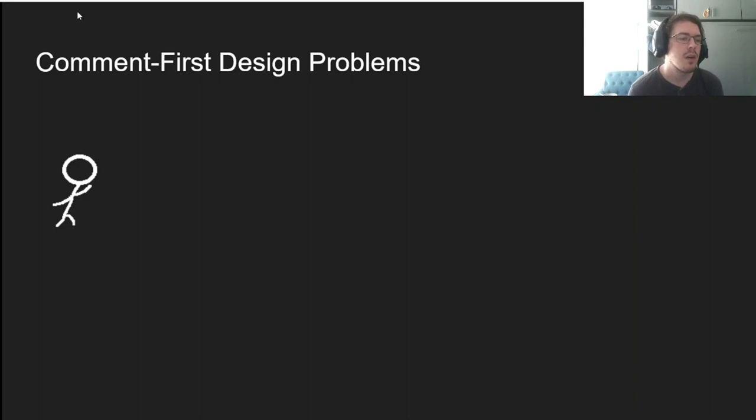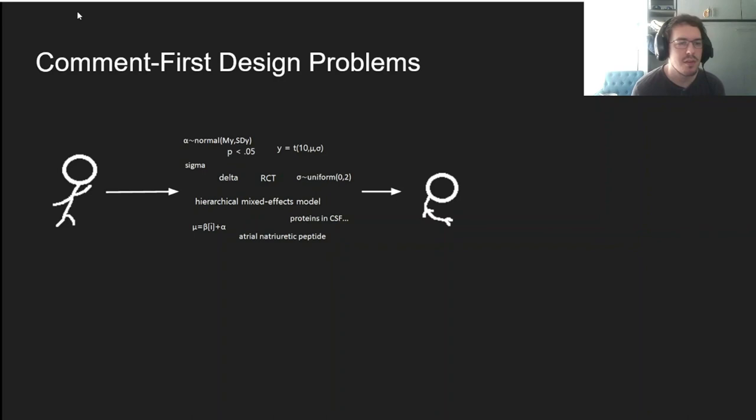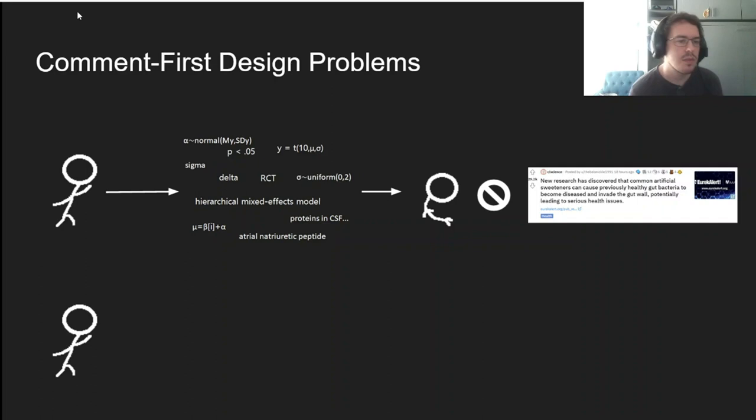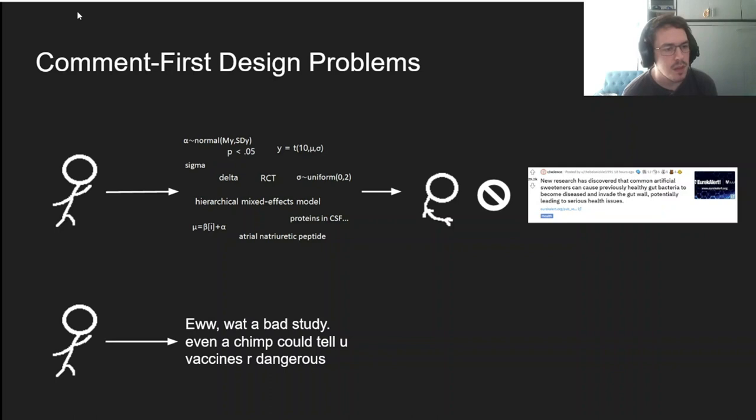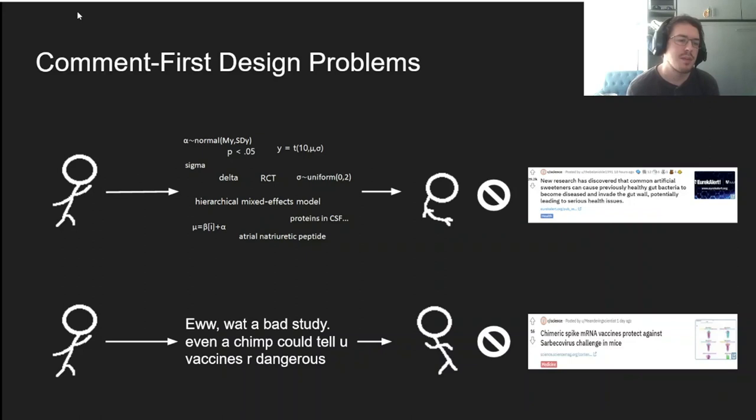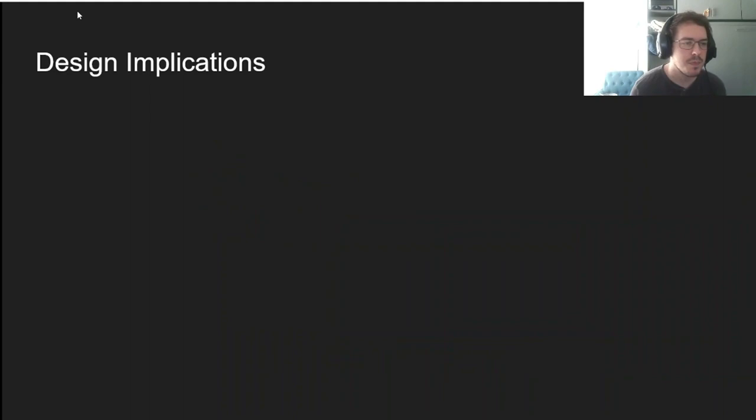So what does this mean in practice? Imagine an r/science user clicks an interesting study but gets bombarded by confusing jargon. They may feel discouraged and decide not to read that study, regardless of its actual content. Worse still, someone could come across a low-quality comment spreading scientific misinformation. Such a similarity heuristic could prompt them to skip a study, meaning that campaigns to discredit science could be particularly effective by using comments to negatively frame associated articles.